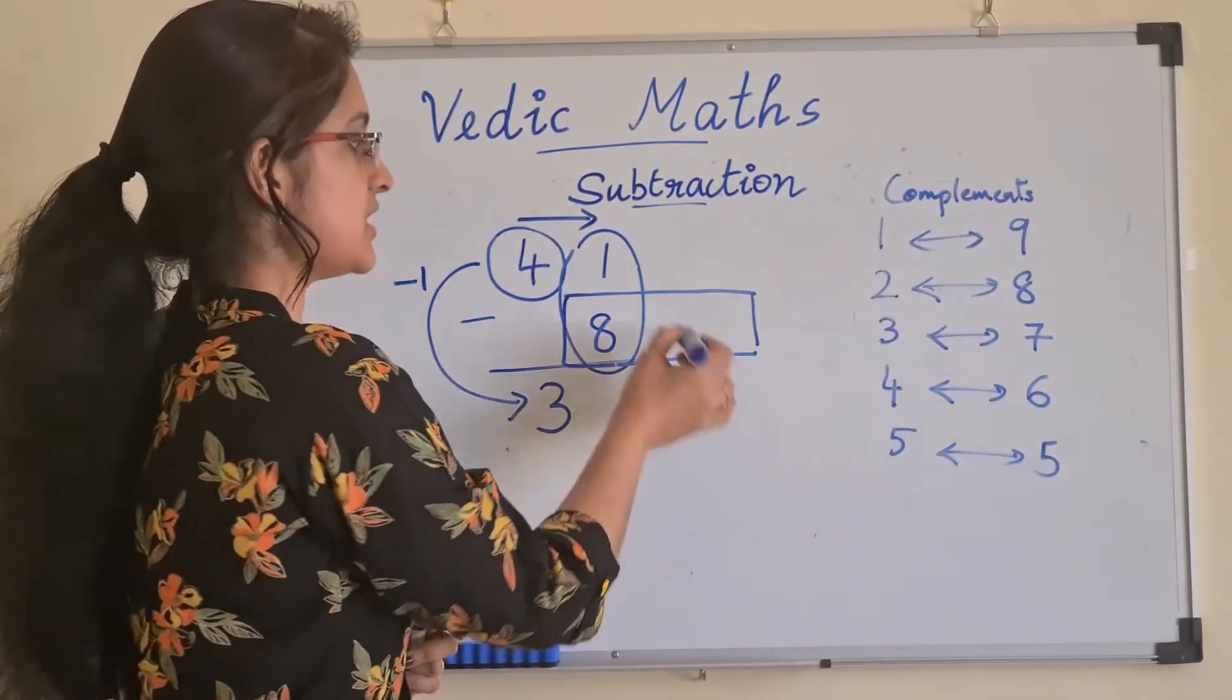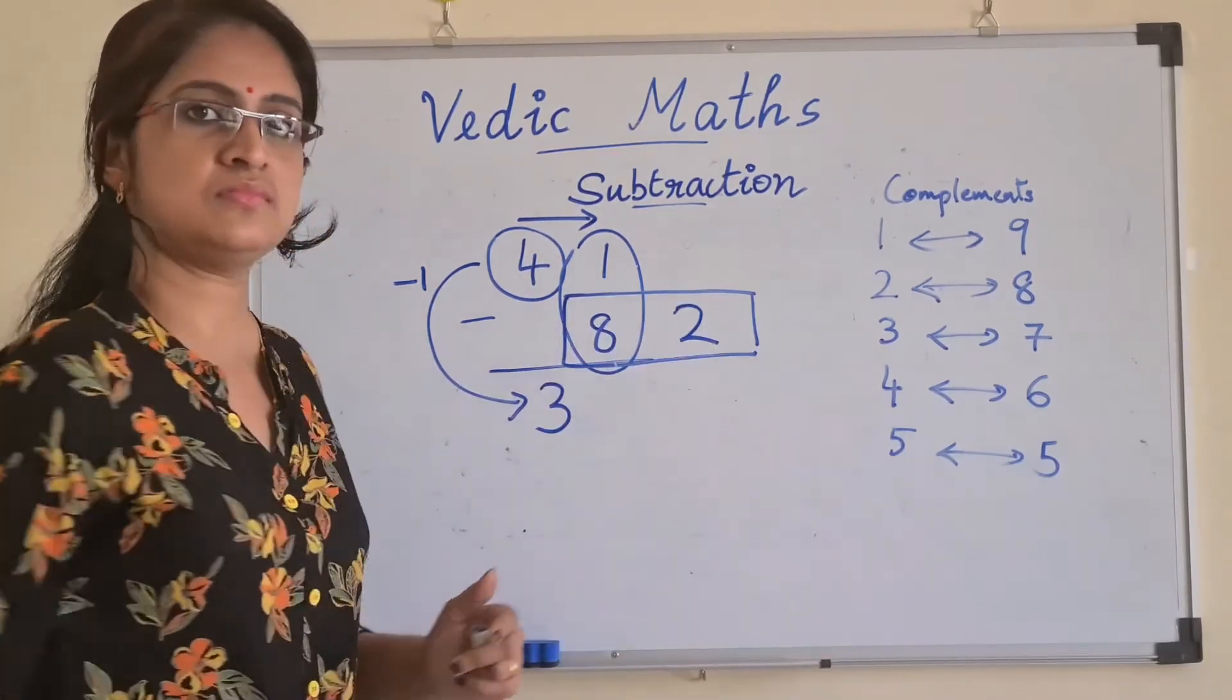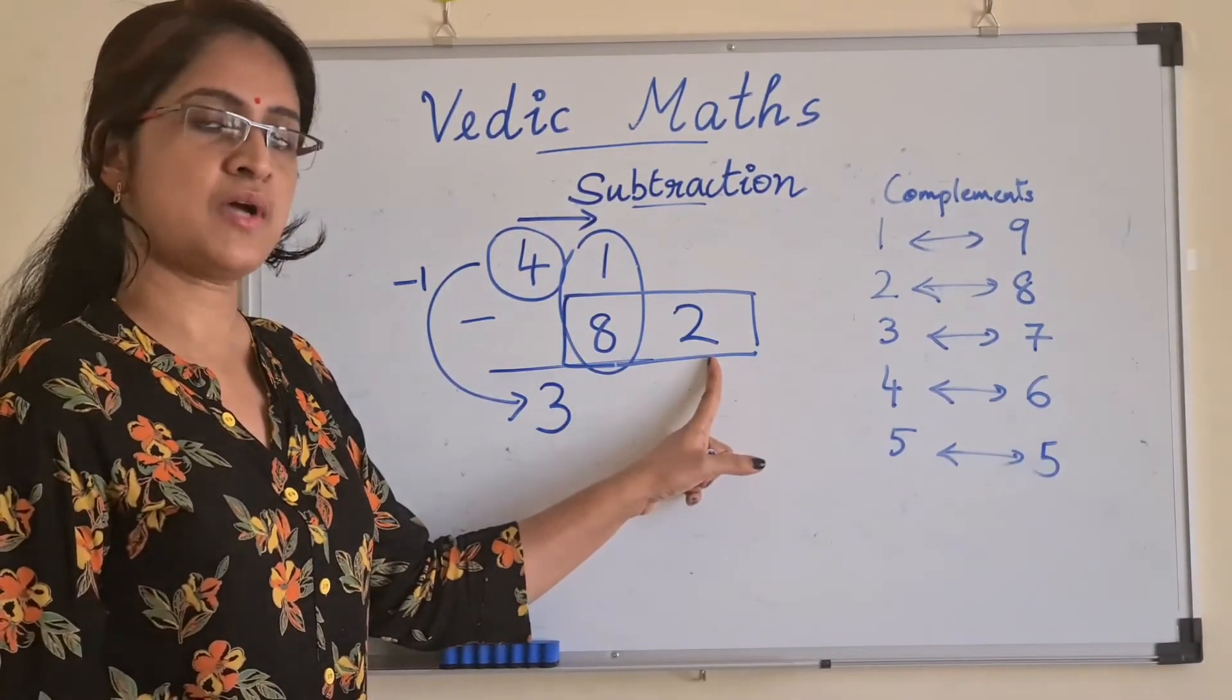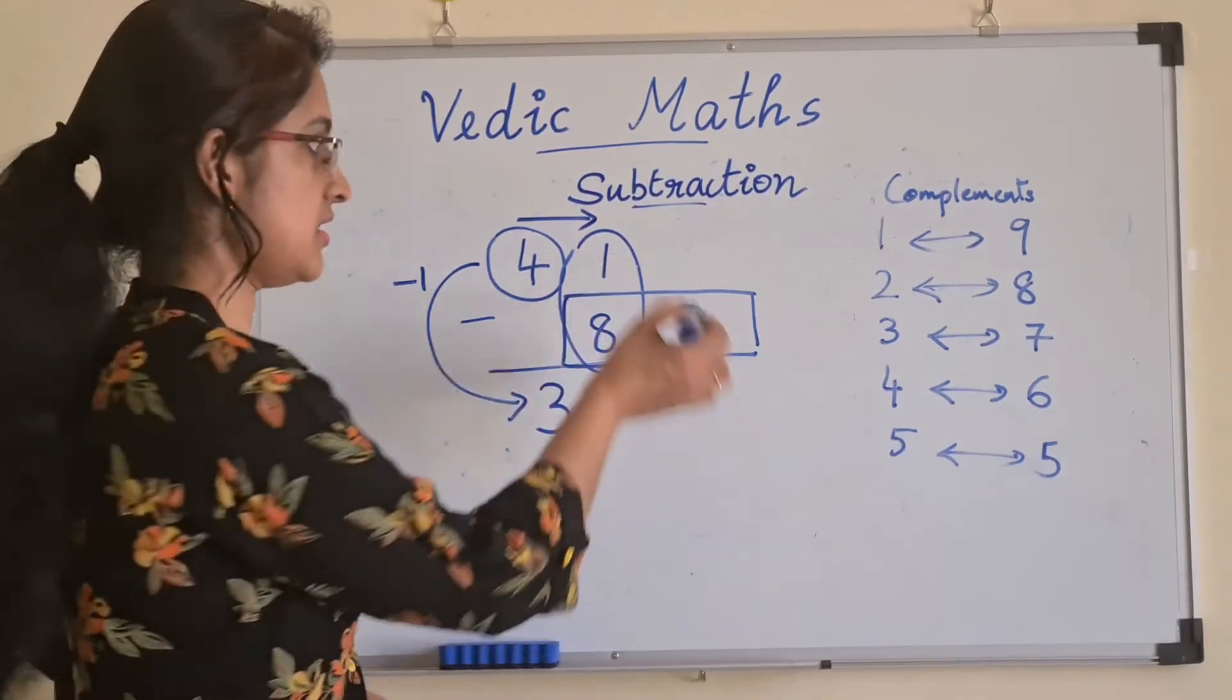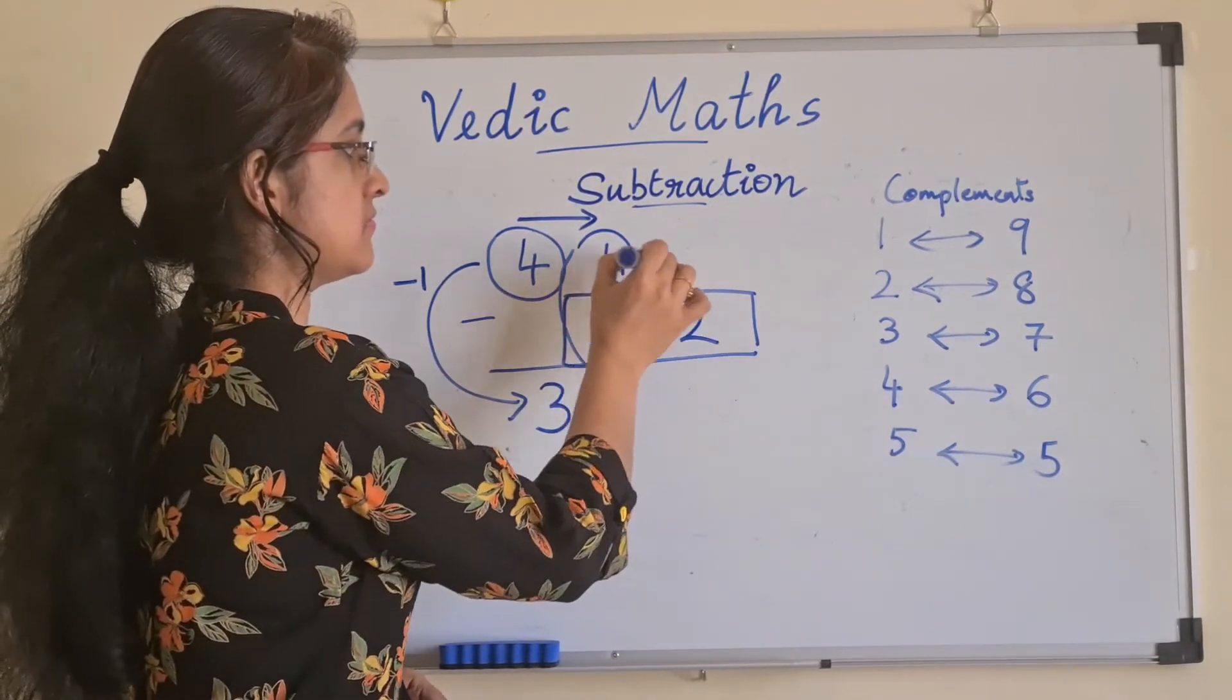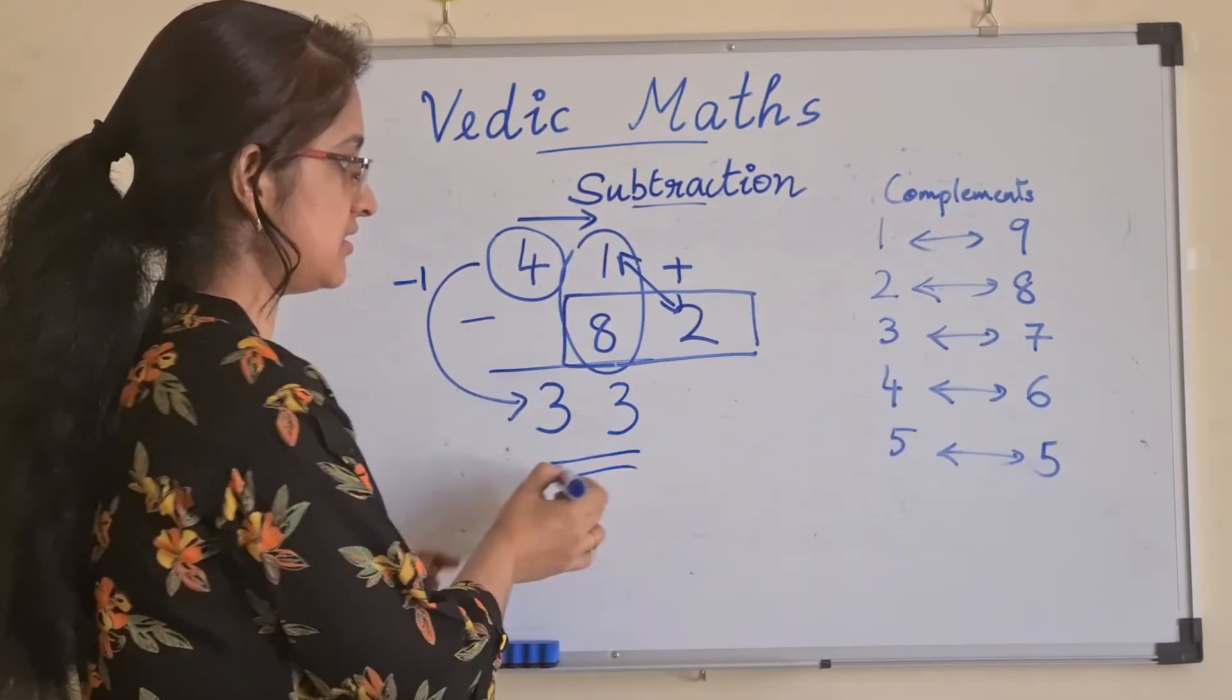The complement of 8 we found, which is 2. And this 2, we are going to add with the first digit. The answer is 33.